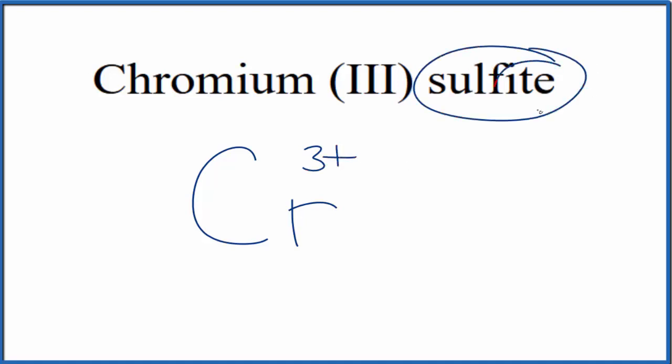For the sulfite, when you see -ite, you're not going to find that on the periodic table. You need to look that up on a table of polyatomic ions, or you could have memorized that the sulfite ion is SO₃, and the whole thing has an ionic charge of 2-.